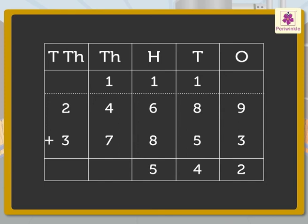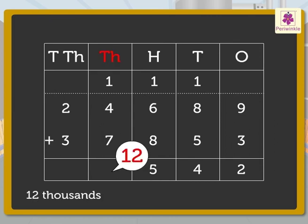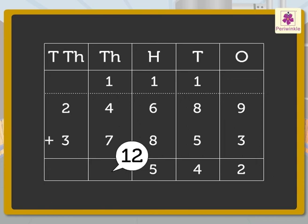Now, add the numbers in the hundreds and thousands columns. Add 1, 4 and 7: we get 12. Regroup the 12 hundreds to 1 thousand and 2 hundreds. Then add the thousands: 1, 4 and 7 gives 12 thousands. Regroup 12 thousands to 1 ten thousand and 2 thousands. Carry the 1 ten thousand to the ten thousands column and write 2 in the thousands column.